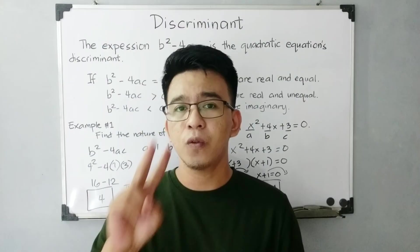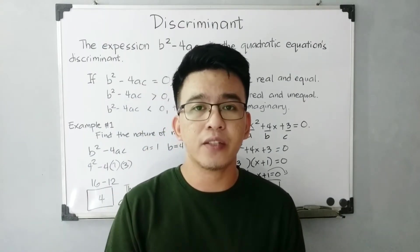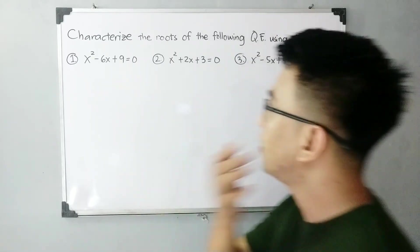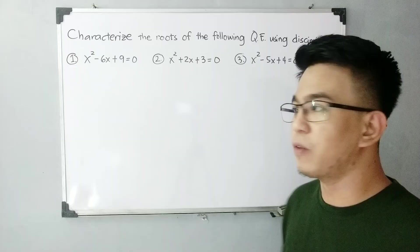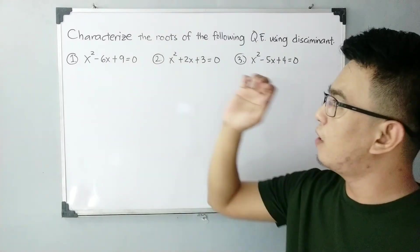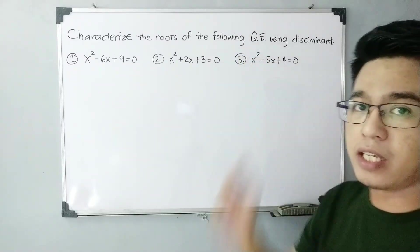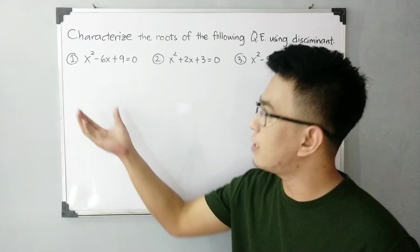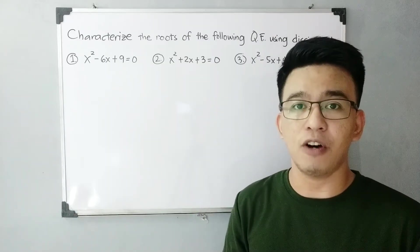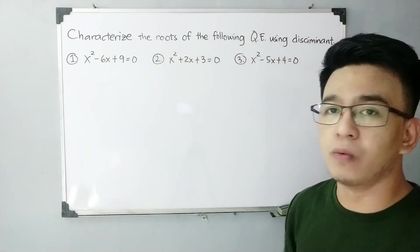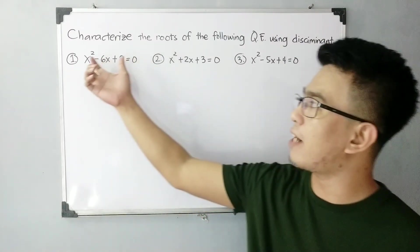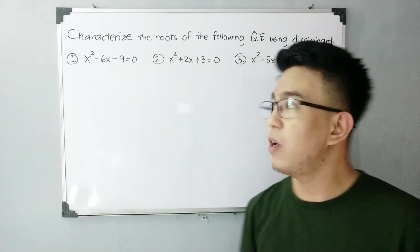I hope you now understand the importance of the discriminant in quadratic equations — because you may be asked to find the nature of the roots without fully solving. In the next part, I'll give two more examples solving for the discriminant, and you'll try number 3 on your own. Let's continue determining the nature of the roots using the discriminant. We will answer items 1, 2, and 3 — characterize the roots of the following quadratic equations using the discriminant. I'll do numbers 1 and 2, and number 3 is for you to solve and share in the comments.